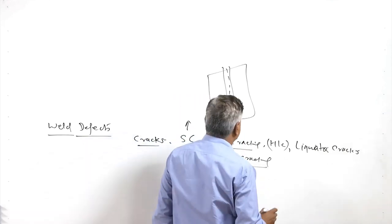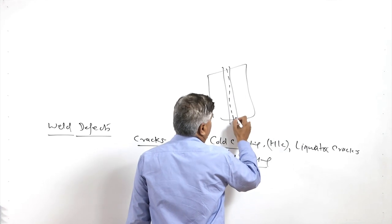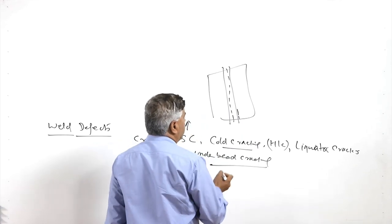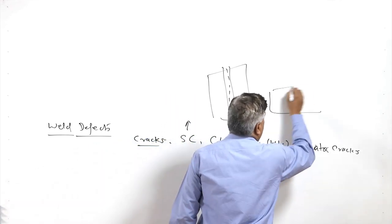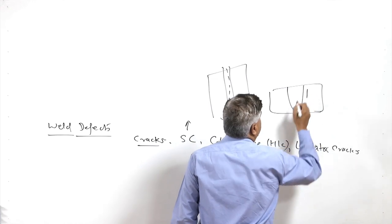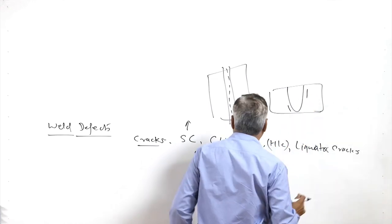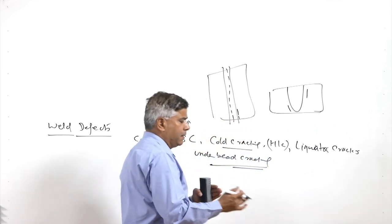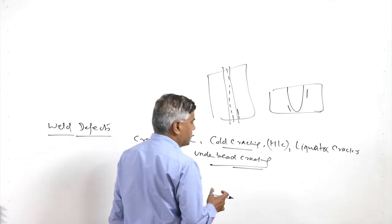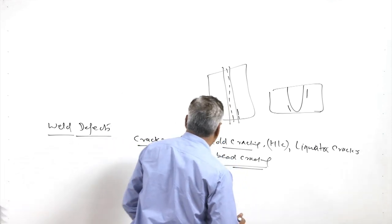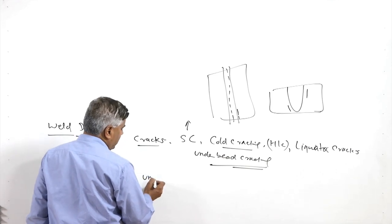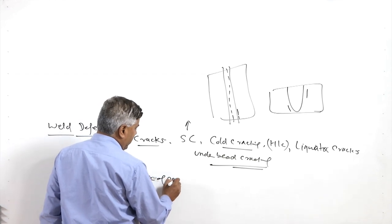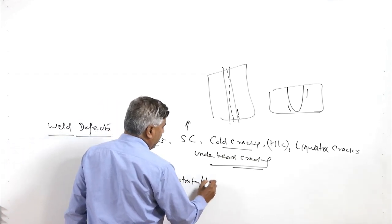Cold cracking occurs mostly in the weld metal and also in the heat affected zone. Liquation cracks occur near the fusion boundary, and under-bead cracking occurs below the weld bead, in or near the heat affected zone, due to the separation of metal and inclusions caused by tensile residual stresses acting in the weld joint. Another important defect is lack of penetration and lack of fusion.